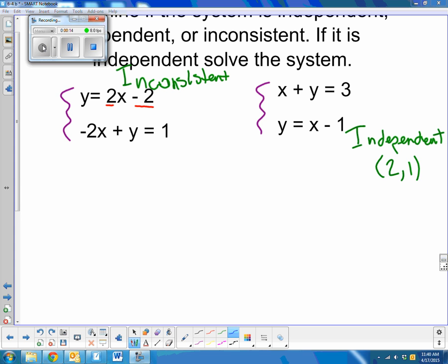So I'm going to get y by itself for both of them. If I subtract x, subtract x, I get y equals negative x plus 3. That was my equation. Now, if I look, if they're parallel lines, they're inconsistent.